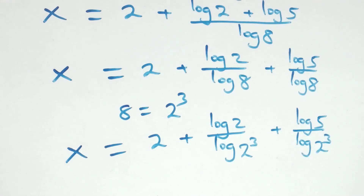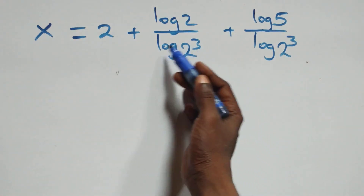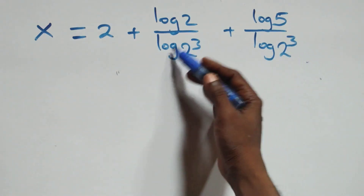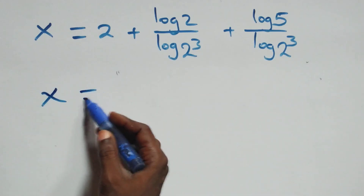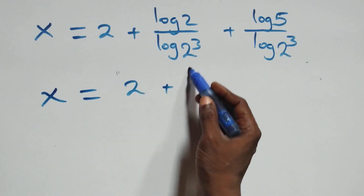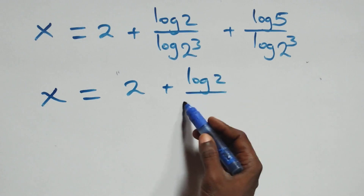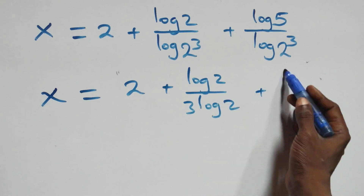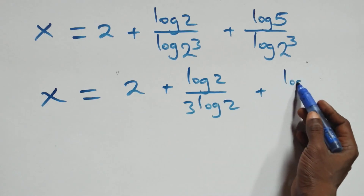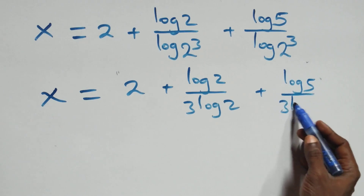Then we apply the power law of logarithm: since 8 equals 2 raised to power 3, we write log 8 as 3·log 2. So we have x equals 2 plus log 2 over 3·log 2, plus log 5 over 3·log 2.